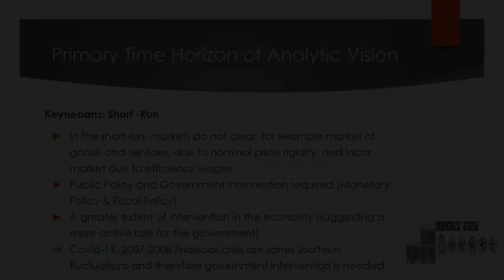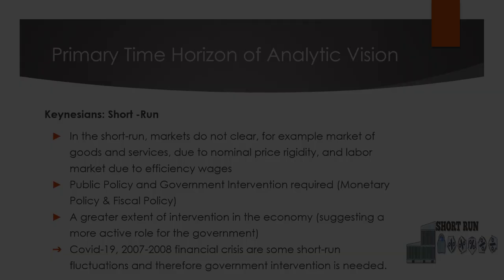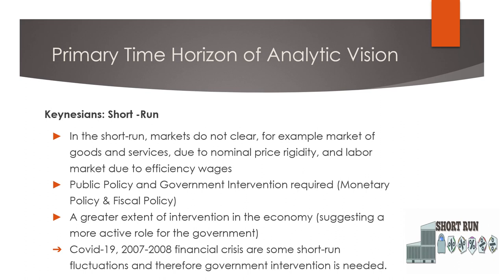The free market economy is highly recommended by the Classicals. While for the Keynesians, they base their assumptions on the short run. In the short run, markets do not clear — for example, the market for goods and services due to nominal price rigidity, and the labor market due to efficiency wages. Public policy and government intervention are required, including monetary policy and fiscal policy, suggesting a more active role for the government. For example, the current situation of COVID-19 or the 2007–2008 financial crisis are short-run fluctuations, and therefore government intervention is needed.